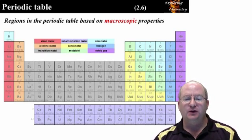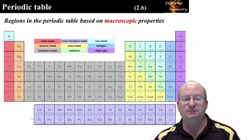At the beginning of this chapter, we looked at the macroscopic and microscopic classifications of matter. The periodic table can be divided into regions based on the macroscopic and microscopic classifications.